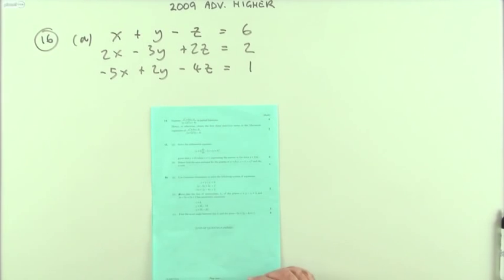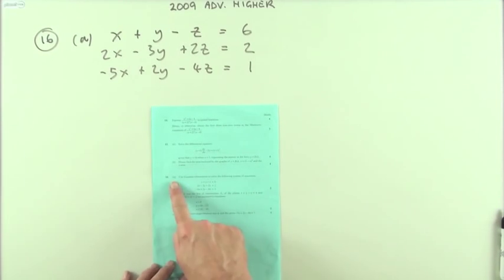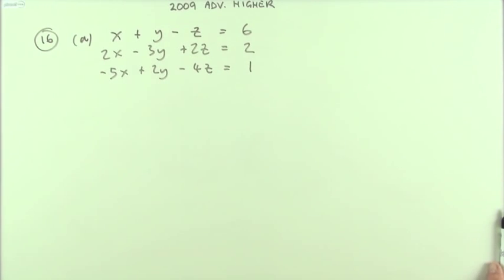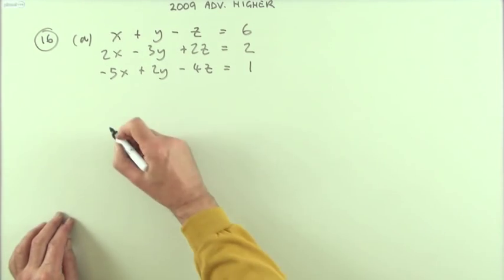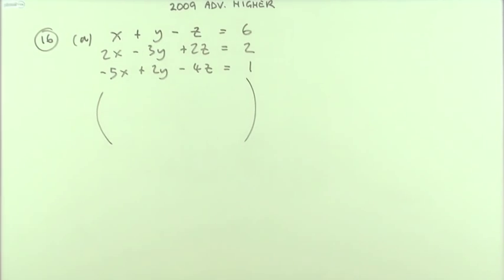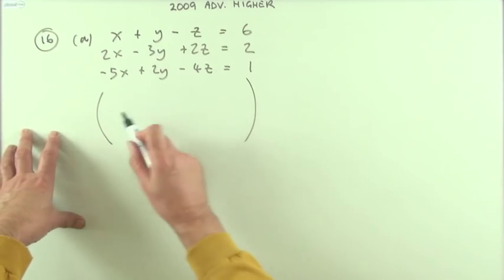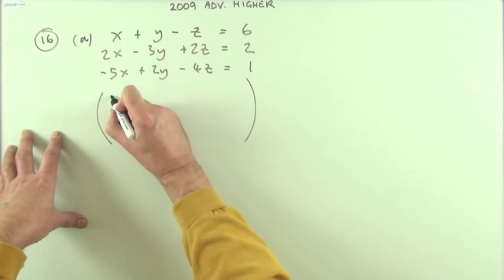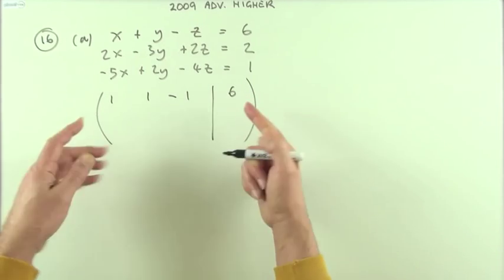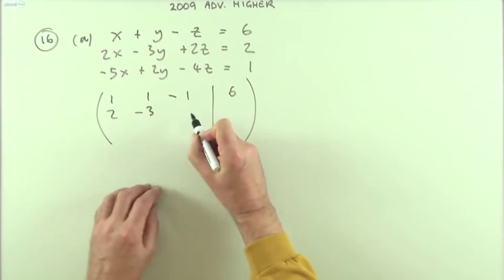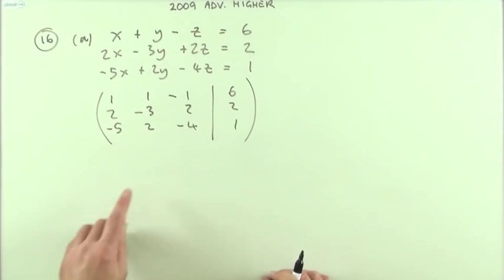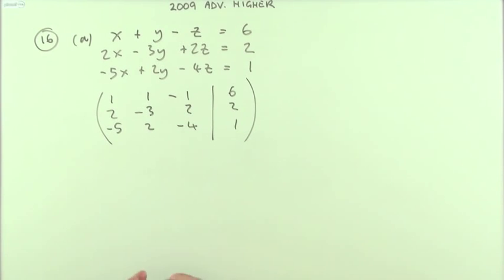The last question, number 16 from the 2009 advanced paper, has three parts. Part one: use Gaussian elimination to solve that system of equations — five marks. First, let's set up the augmented matrix of all the coefficients: one, one, negative one, one, one, negative one. The object is to reduce that into upper triangular form, replacing those lower elements with zeros.